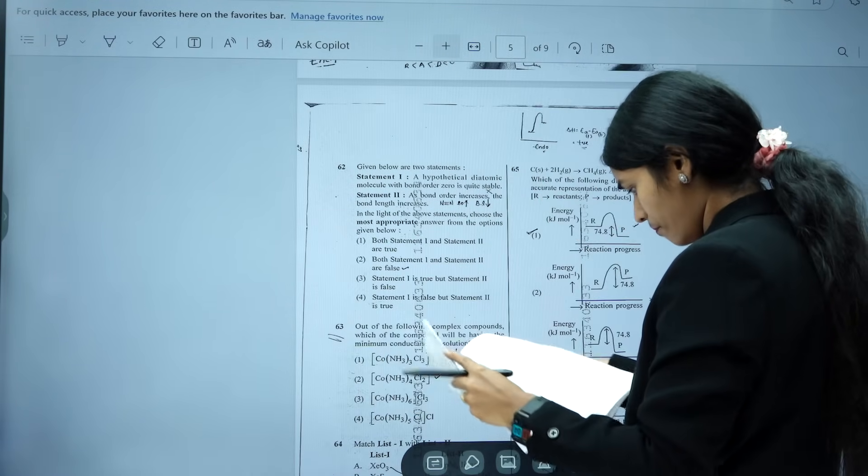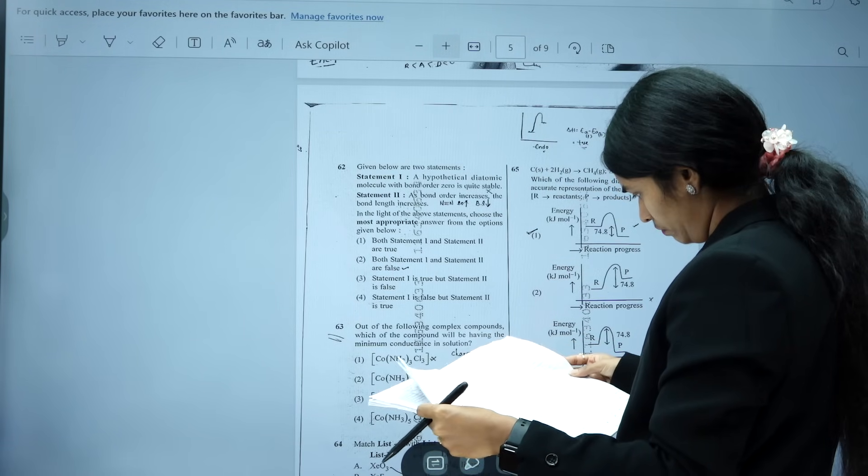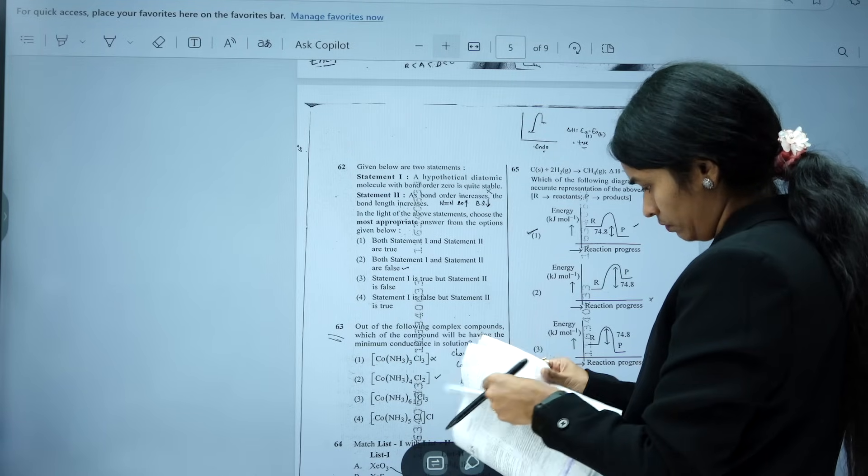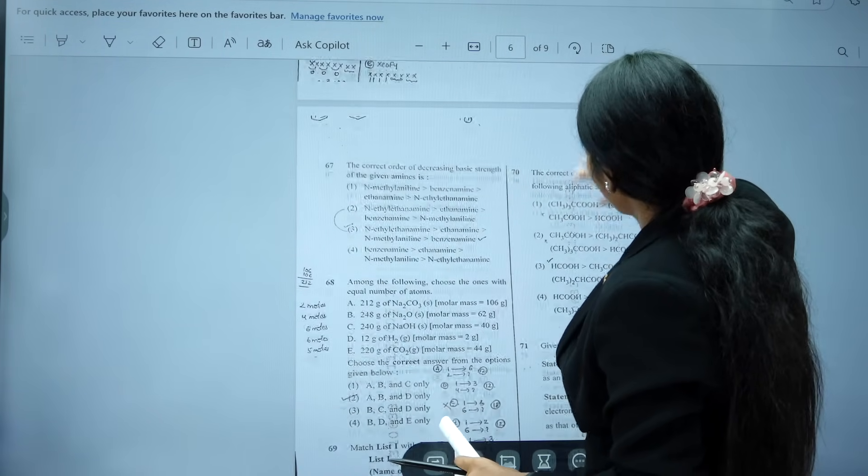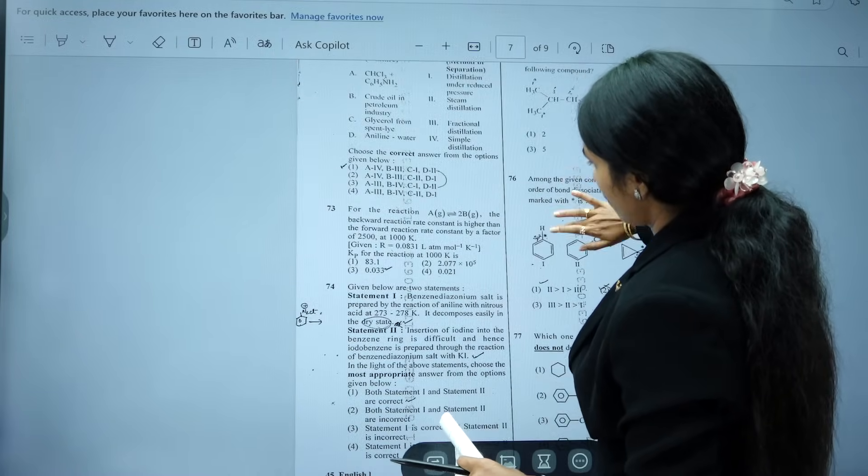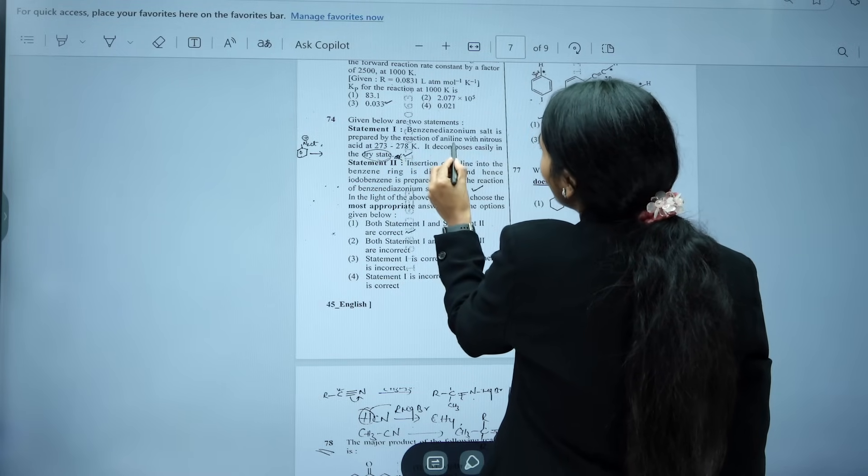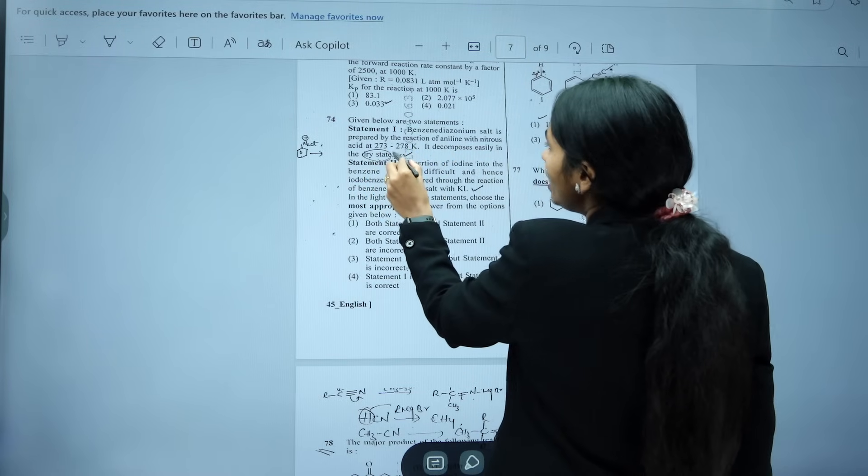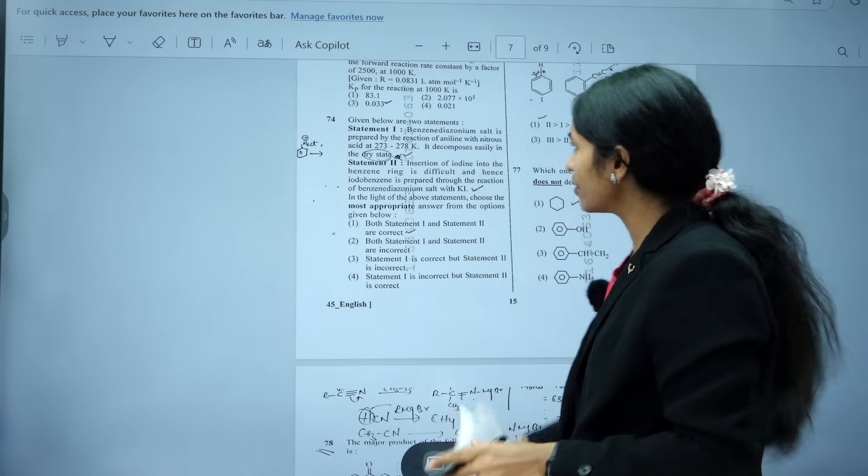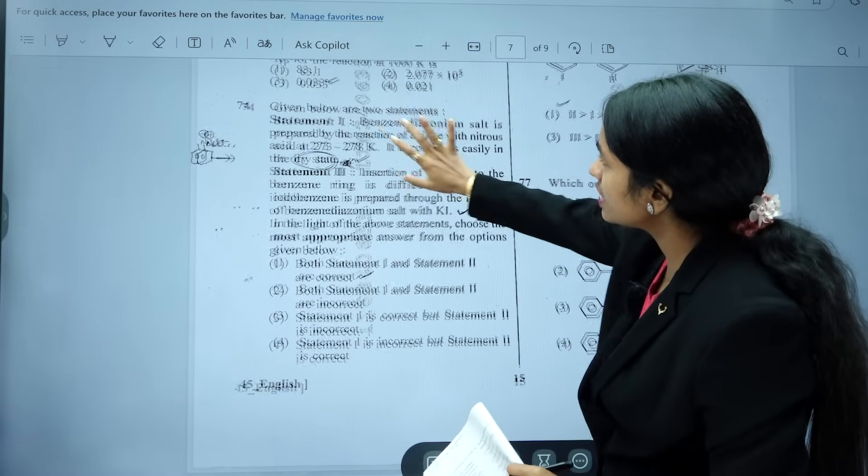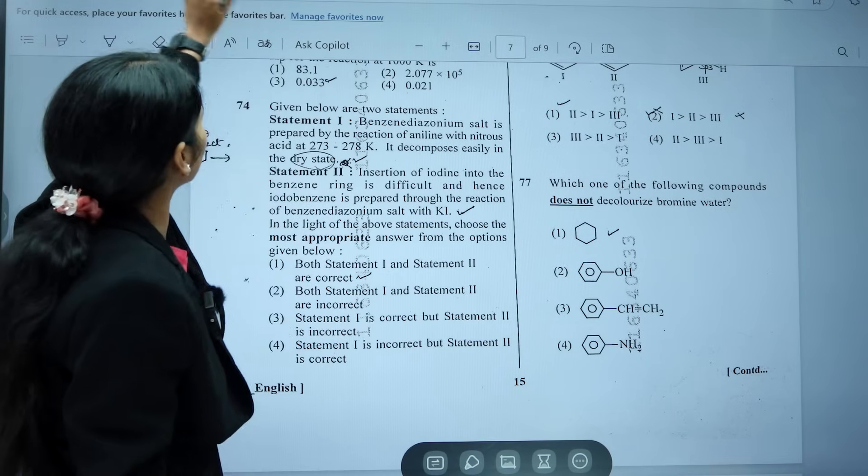Now let us see our paper. Question number 74. This is the question. Benzene diazonium salt is prepared by the reaction of aniline with nitrous acid at 273 Kelvin to 278 Kelvin. It decomposes easily in a dry state. They have given this question. This is from our which topic they have given. That is from amines topic, correct?